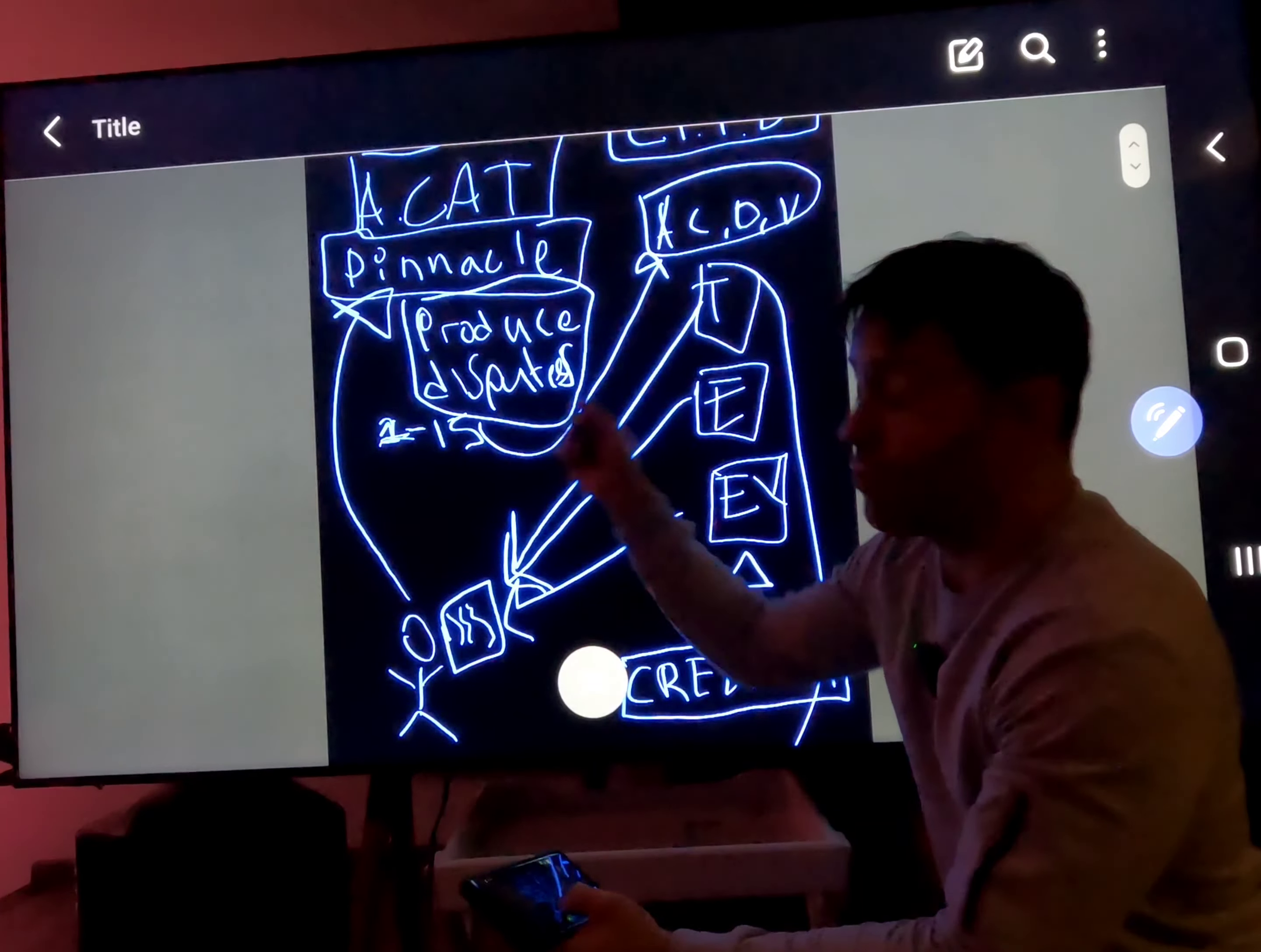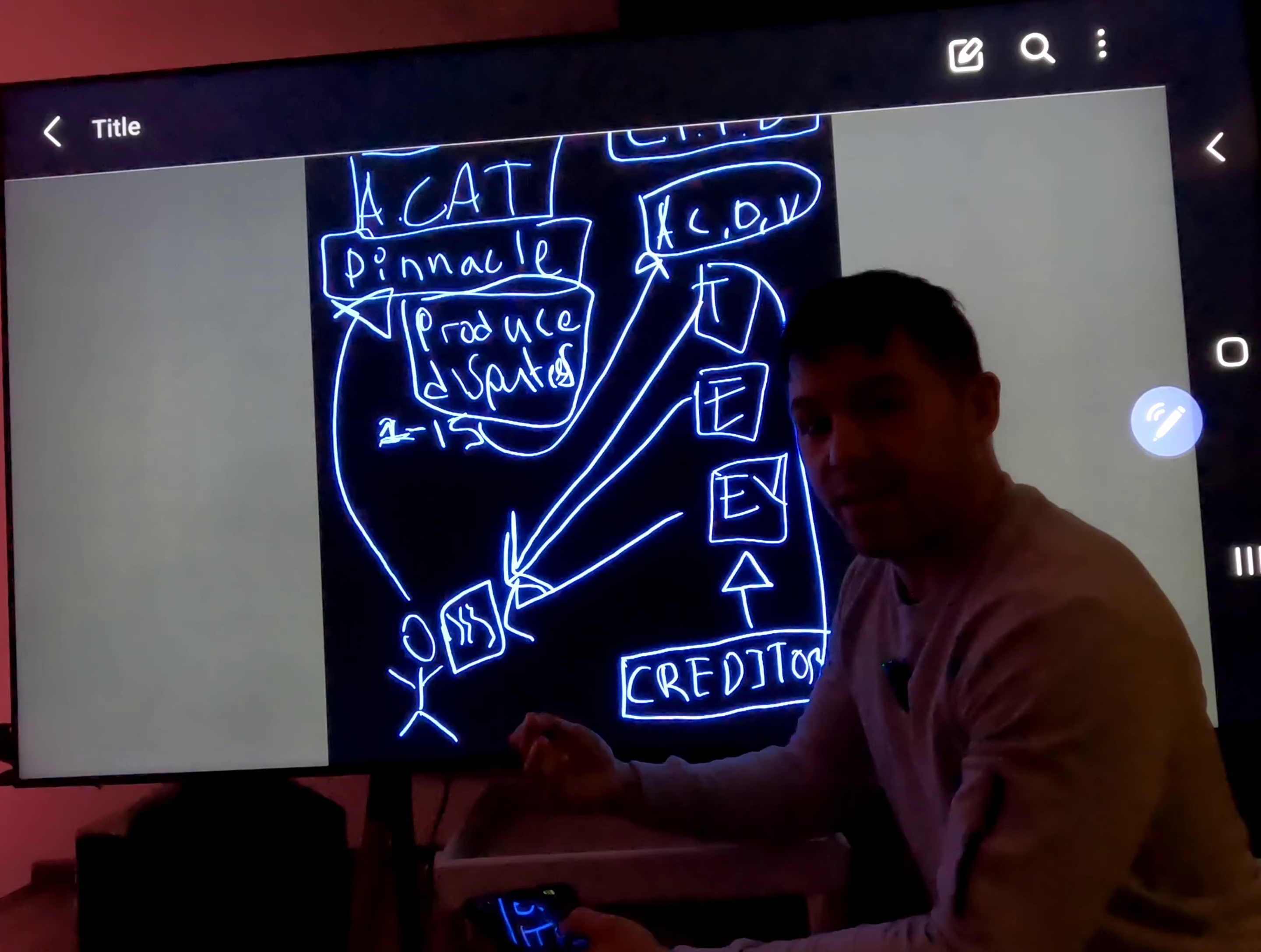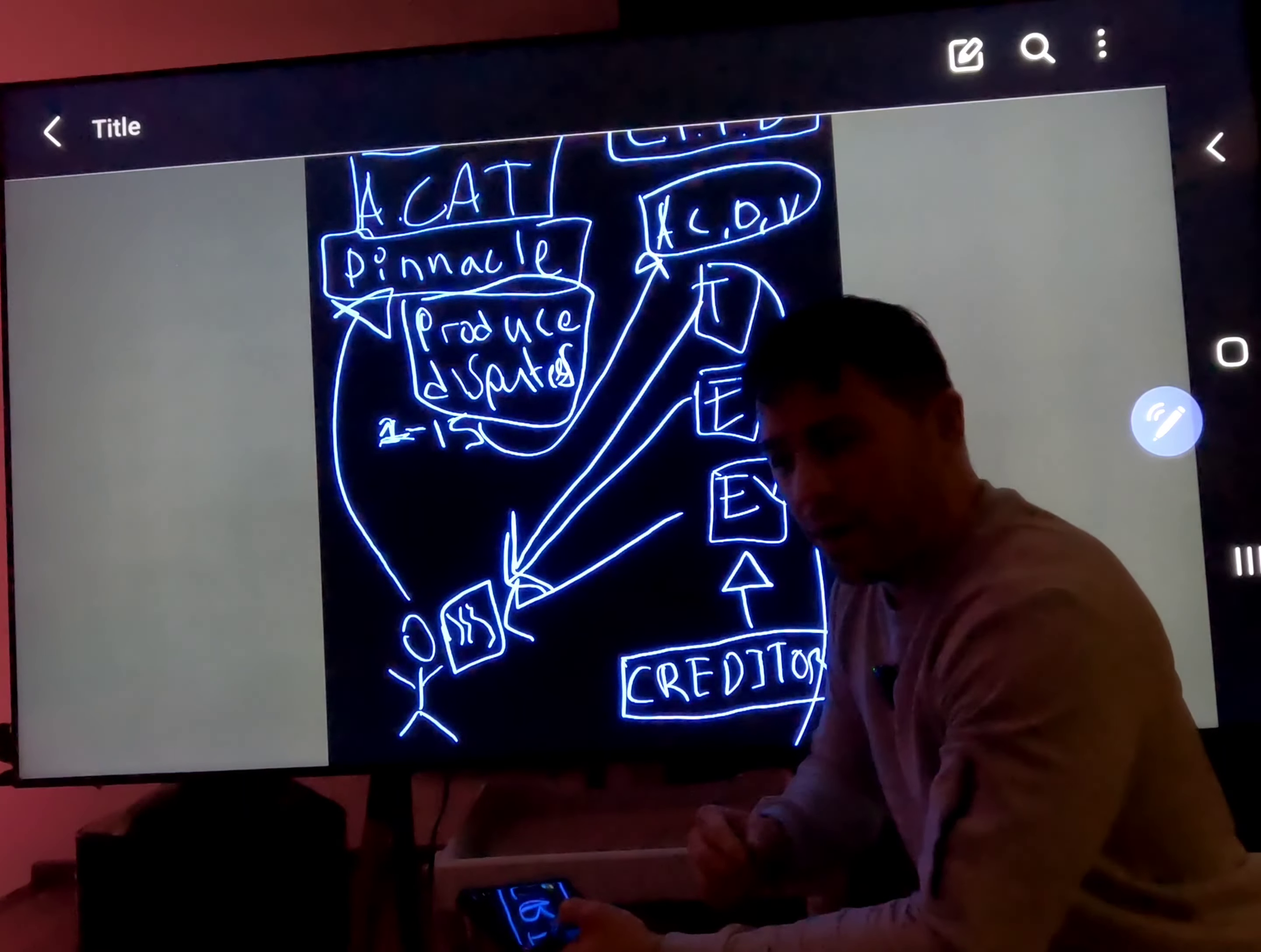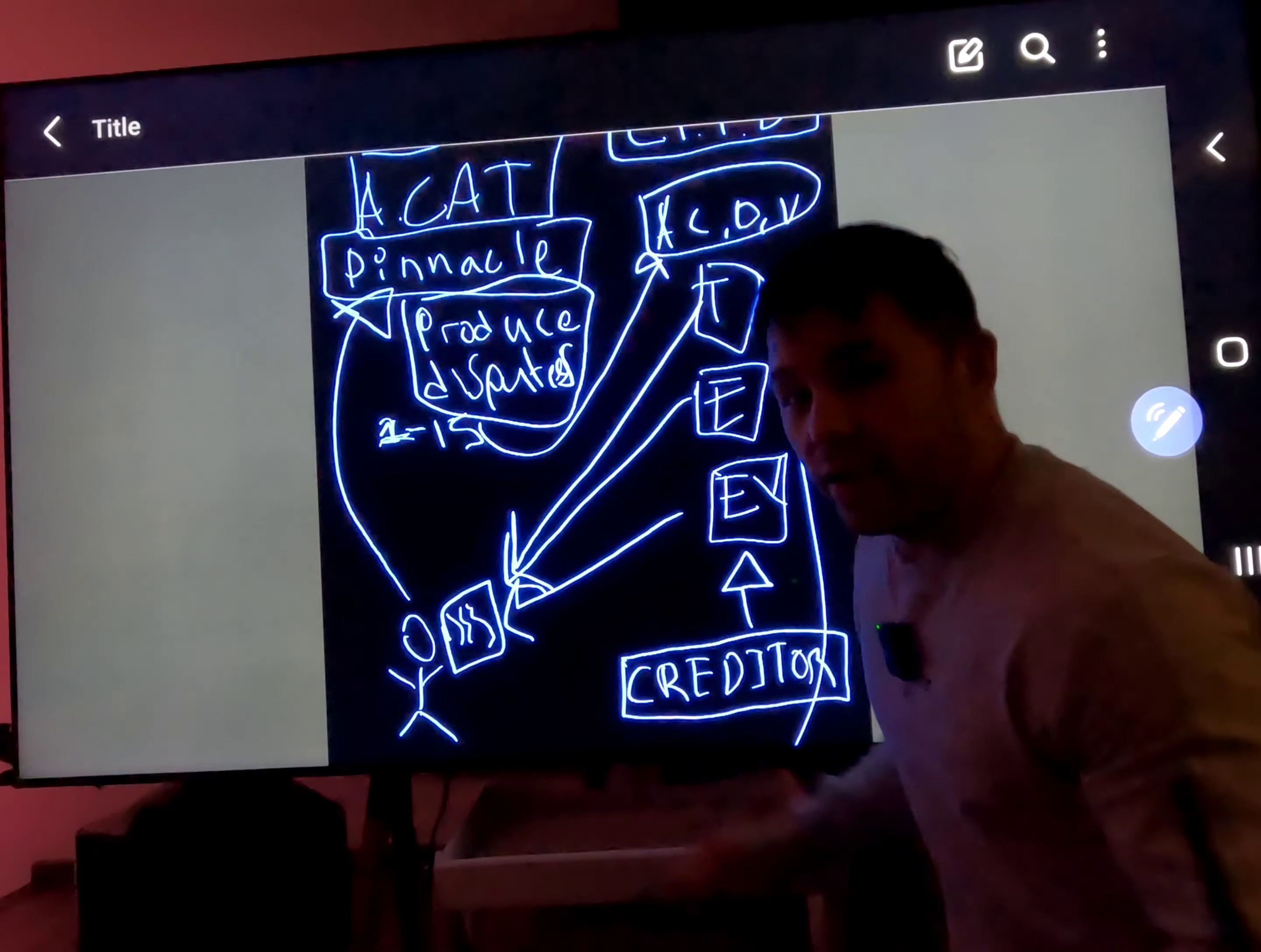The procedure of disputes basically brings light on how transparent the Fair Credit Reporting Act allows us to be. The creditors are taking advantage of you. They're taking advantage of you and they're not being transparent. They're not verifying things accurately. They're reporting things like they're using ACDV when they know they shouldn't.